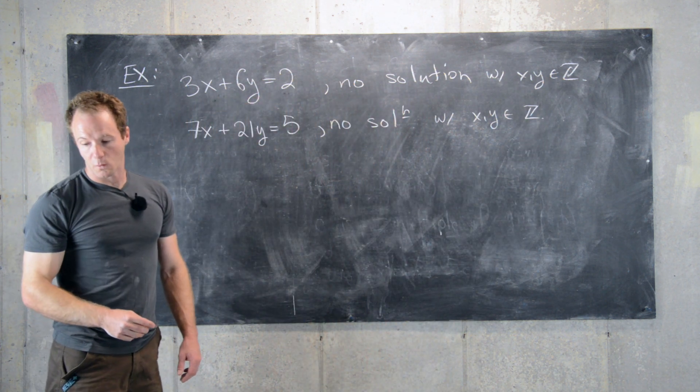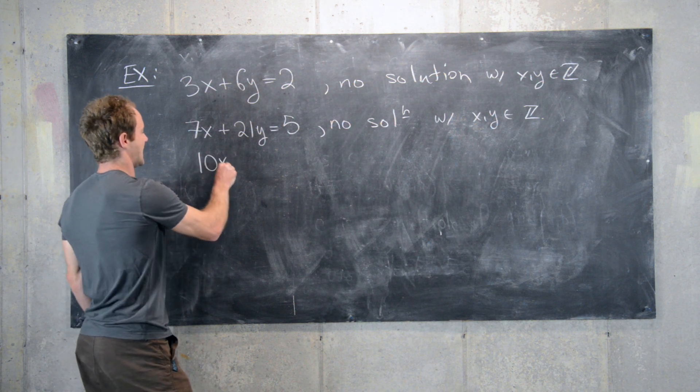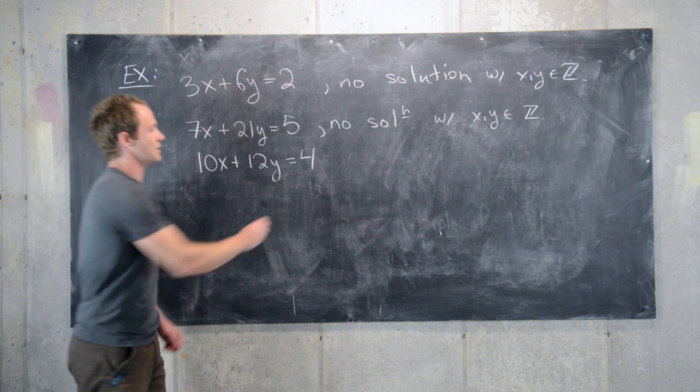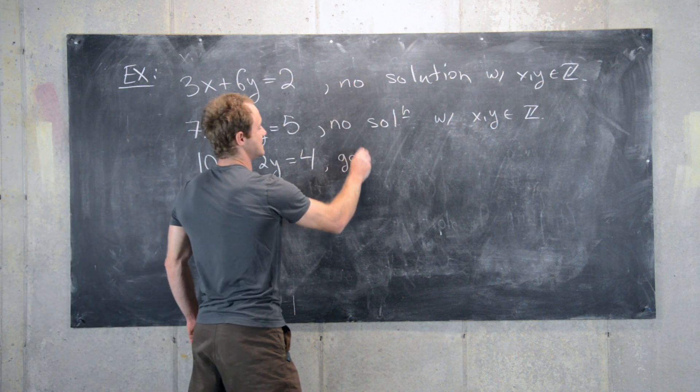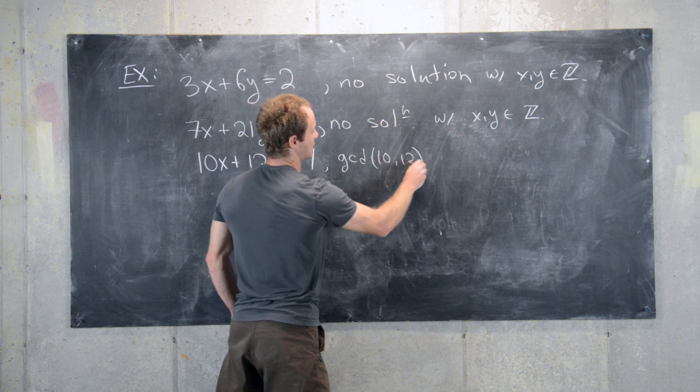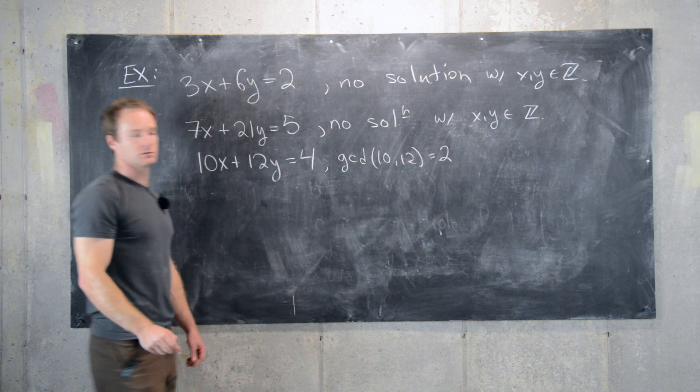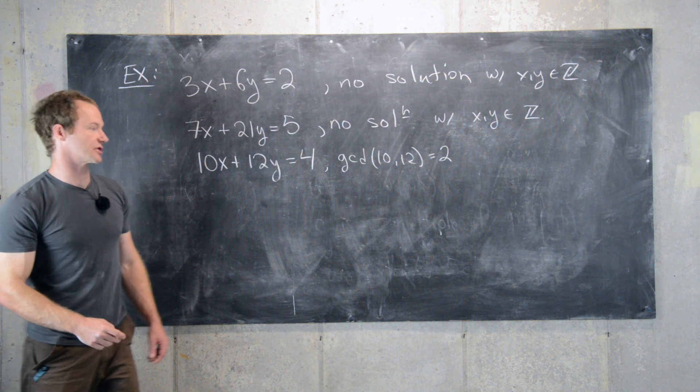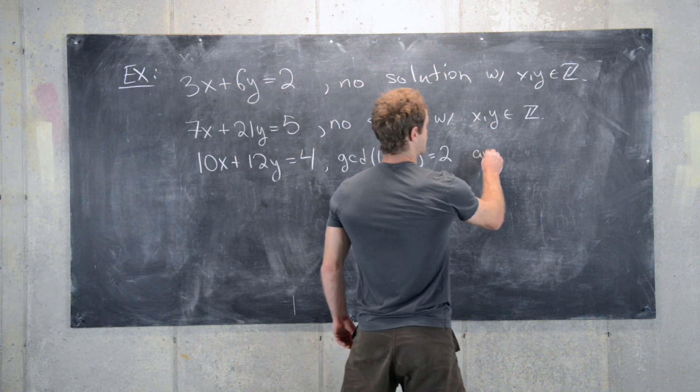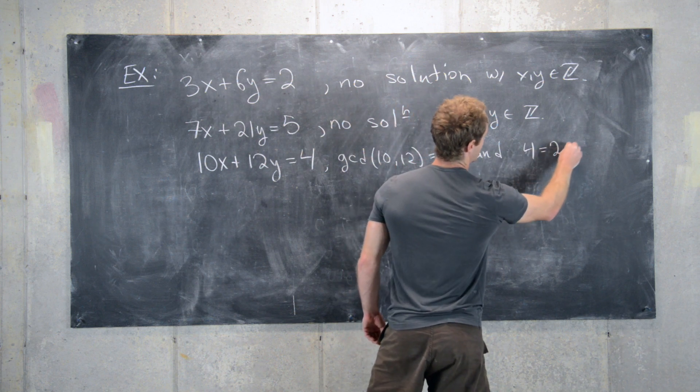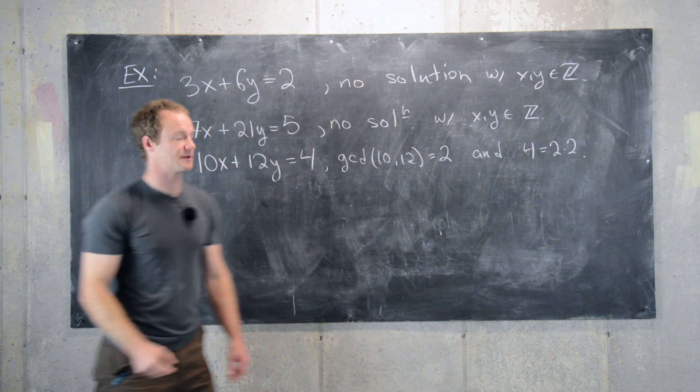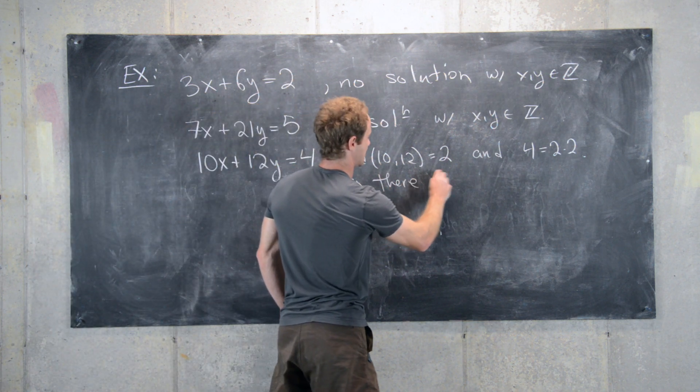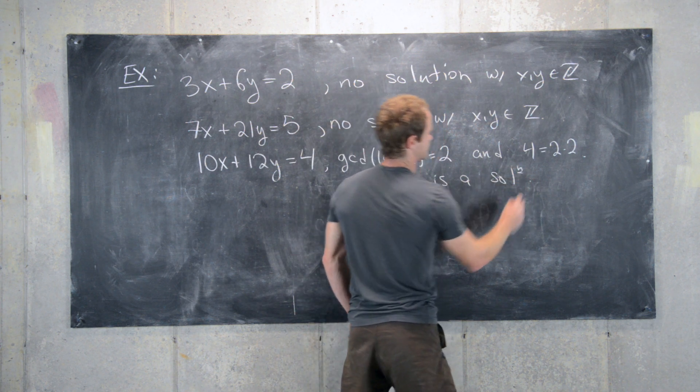Let's look at one more example: 10x plus 12y equals 4. Notice the gcd of 10 and 12 equals 2. And 4 is a multiple of 2, so we're guaranteed to have a solution. 4 equals 2 times 2, in other words it's a multiple of 2, so there is a solution.